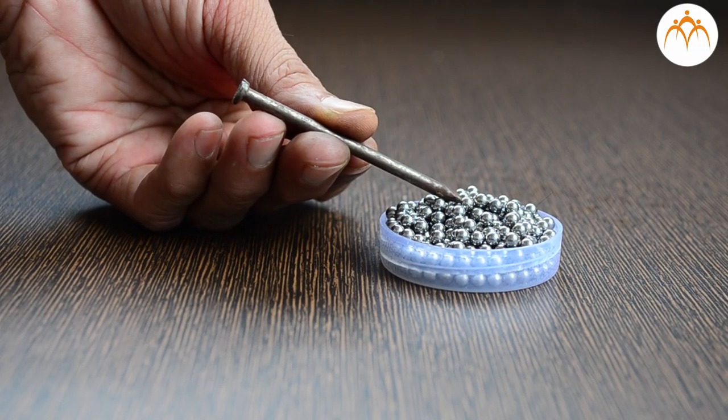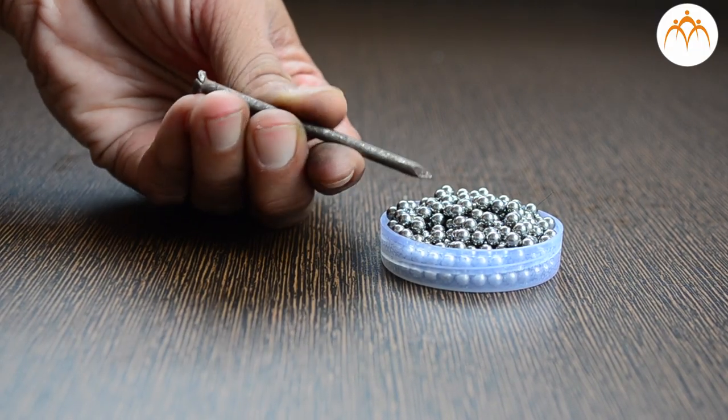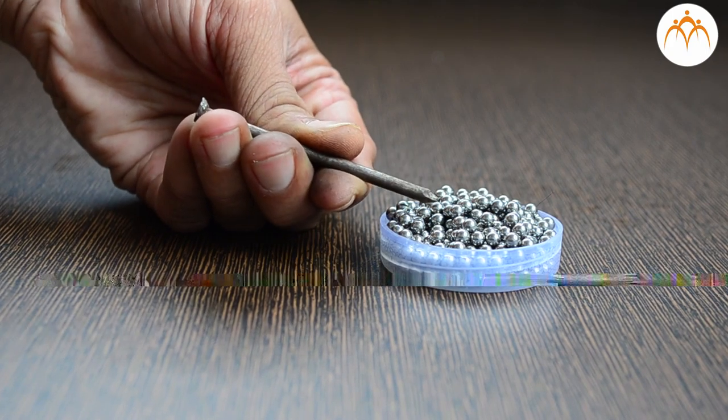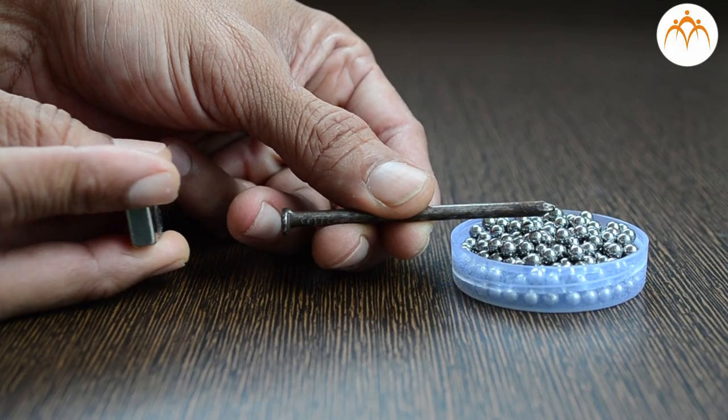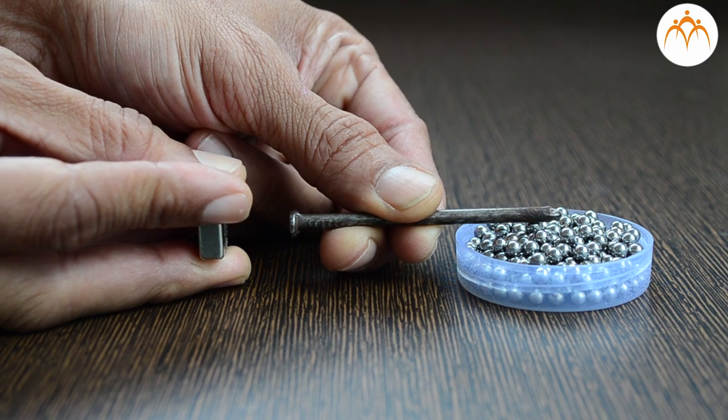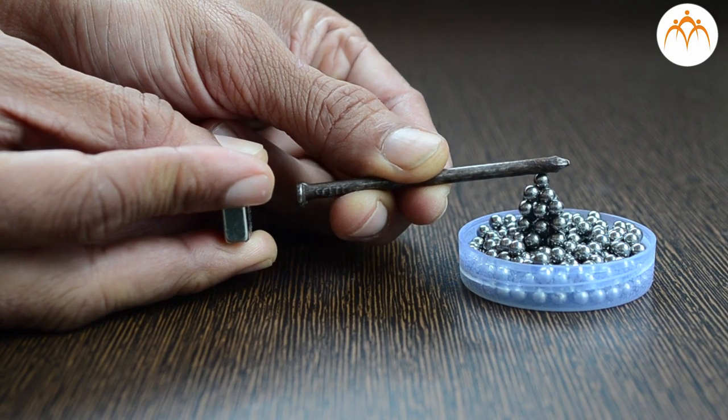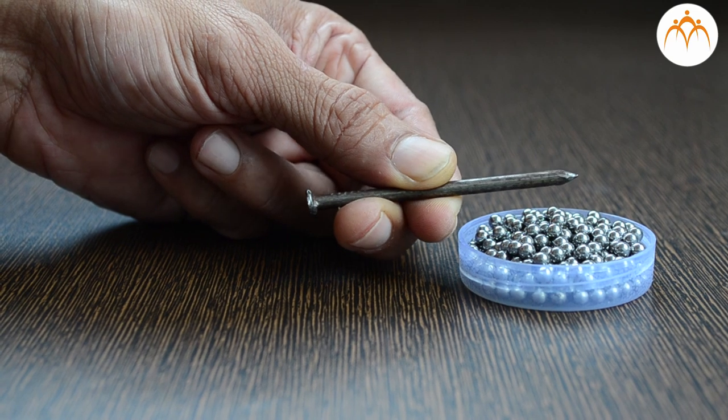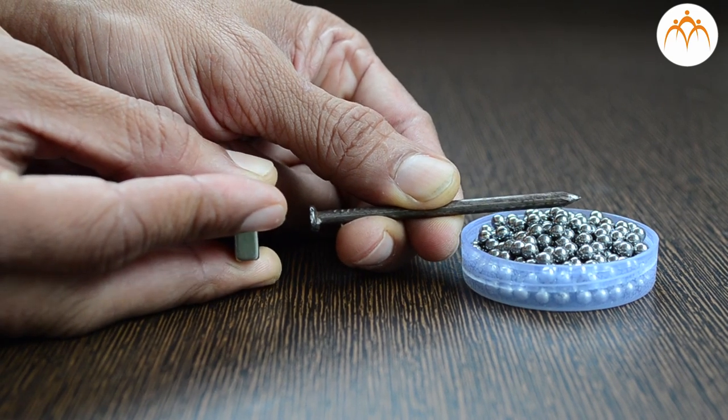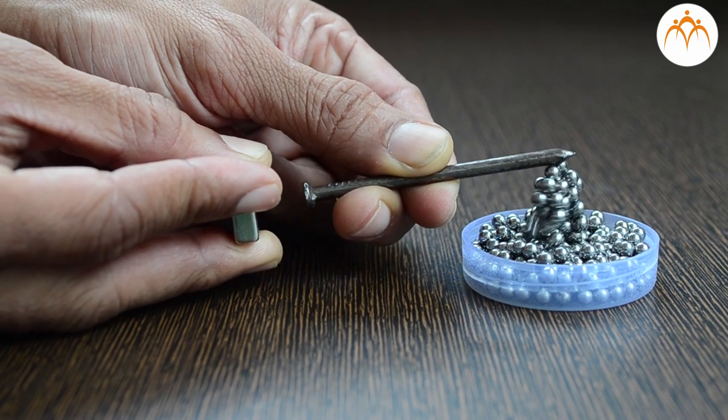If I place this nail near the steel ball, nothing happens. When I bring a strong magnet near the nail, it becomes a magnet itself. Steel ball will leave the nail as soon as I take away strong magnet. Iron does not keep the magnetism permanently.